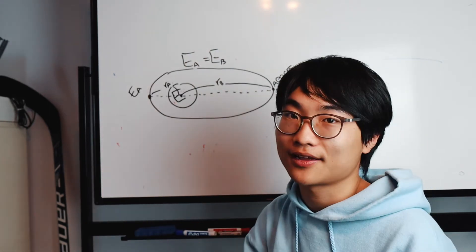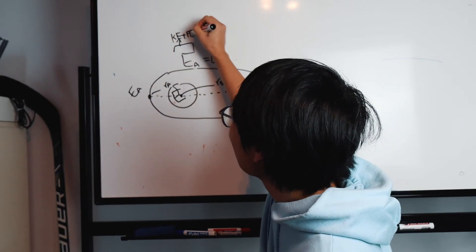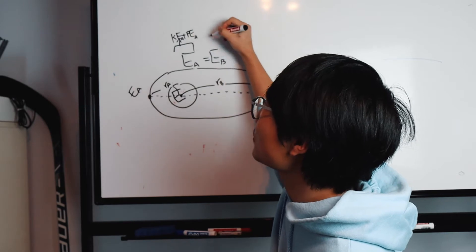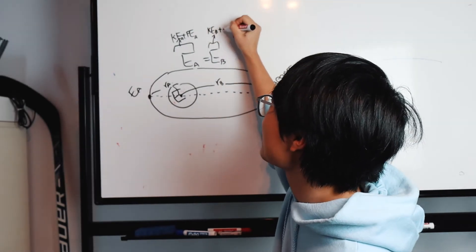Now we're going to calculate that. Ea equals kinetic energy plus potential energy. In this case, it's kinetic energy A plus potential energy A. And Eb is kinetic energy B plus potential energy B.